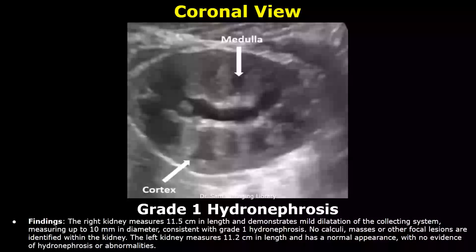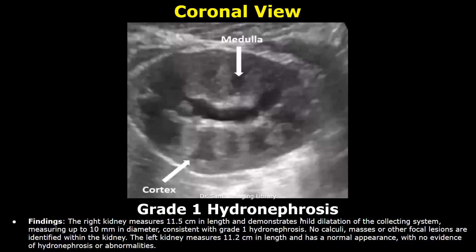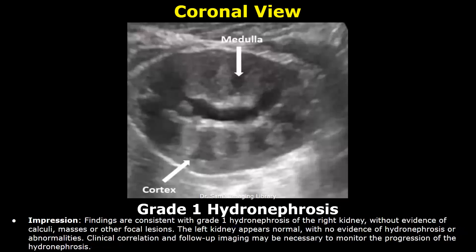Here is a report for grade 1 hydronephrosis. There is mild dilatation of the collecting system measuring up to 10 mm in diameter. Here is the impression. Findings are consistent with grade 1 hydronephrosis of the right kidney, without evidence of calculi, masses, or other focal lesions.